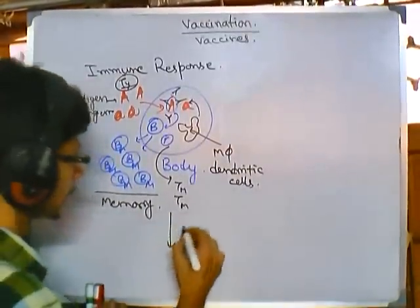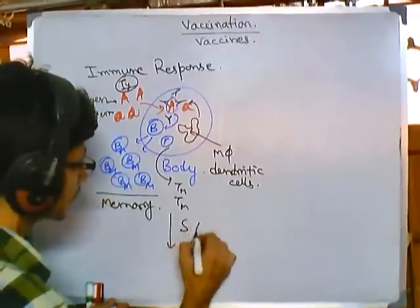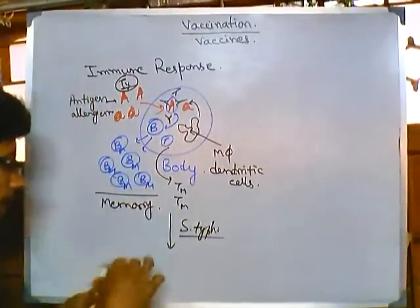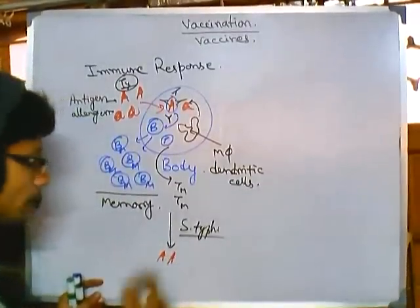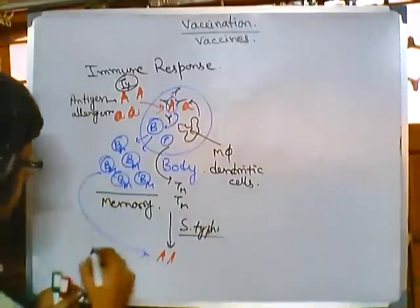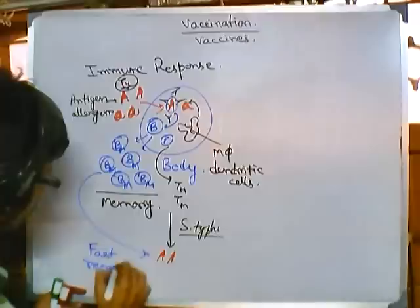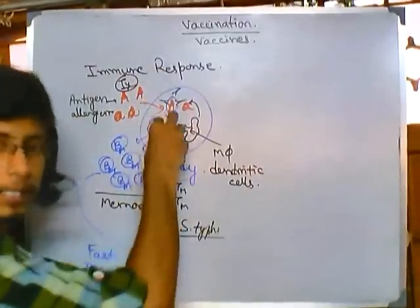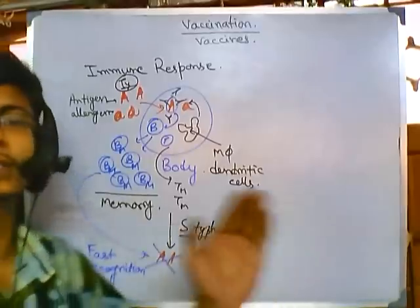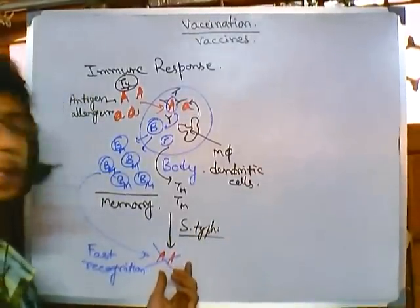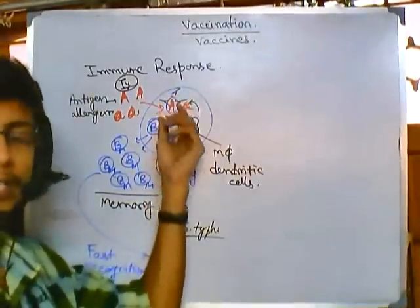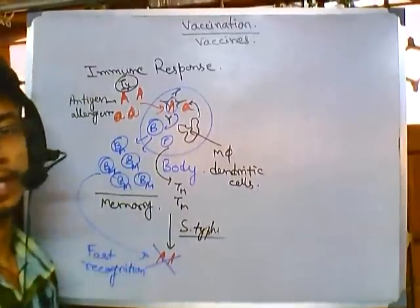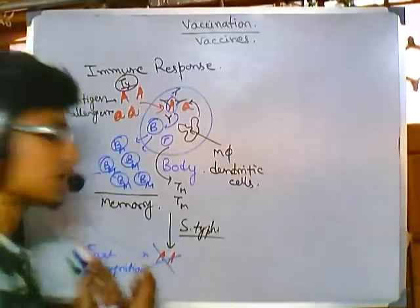In the future, if Salmonella typhi originally invades our body and secretes that same toxin, the memory B cells will recognize it very fast — very fast recognition and destruction. If we haven't injected earlier, this toxin enters and it will take a long time to produce cells against this particular antigen. But because we injected it earlier, it creates a response fast, and that's how we can cure from the disease pretty quickly — the disease cannot hold on.